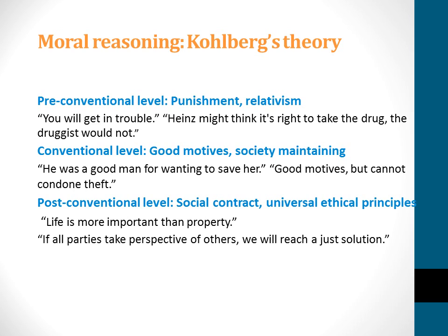Finally, there is the post-conventional level. Kohlberg believed many people will never actually reach this level of moral reasoning. At this level, you reason using social contract or universal ethical principles. With the social contract idea, a response might say life is more important than property, so yes, he should have done that because his wife's life should trump everything. Universal ethical principles state that if all parties took the perspective of others, we could reach a just solution.